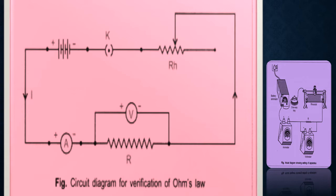We know from Ohm's Law that voltage should be proportional to current. In the circuit, the positive terminal of the ammeter is connected to the positive of the battery, and the negative of the ammeter connects to the positive terminal of the voltmeter. The negative terminal of the voltmeter connects to the upper terminal of the rheostat. The lower terminal of the rheostat connects through a key to the negative terminal of the battery. The resistance wire R of unknown resistance is connected in parallel across the voltmeter.